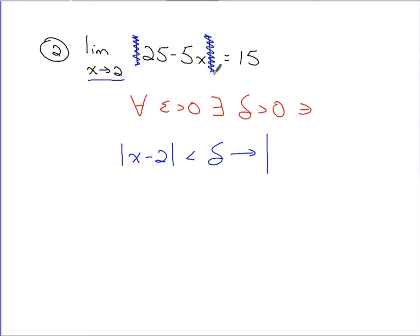The function is 25 minus 5x. And we are subtracting the limit, 15. All of that will be less than epsilon, just as we discussed on the previous problem.